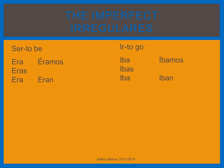And finally, the last imperfect irregular is ver, and the conjugations are: veía, veías, veía, veíamos, veían. Each of these has an accent on the I.